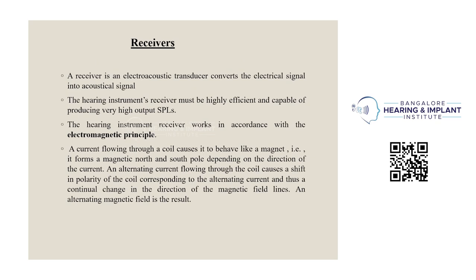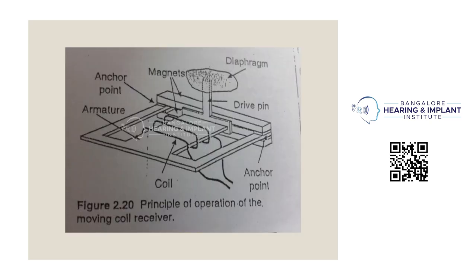The receiver is an electroacoustic transducer that converts electrical signals to acoustic signals. Hearing instrument receivers must be highly efficient and capable of producing very high output SPLs. The hearing instrument receiver works in accordance with the electromagnetic principle: current flowing through a coil causes it to behave like a magnet, forming a magnetic north or south pole depending on the direction of current. An alternating current flowing through the coil causes a shift in polarity corresponding to the alternating current, resulting in a continual change in the direction of the magnetic field — an alternating magnetic field is the result.